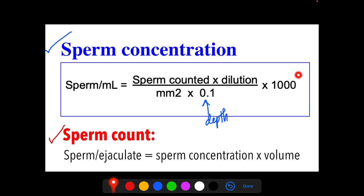For the formula: sperm concentration is reported as sperm per mL — sperm counted (in RBC or WBC squares) multiplied by dilution, divided by the area of the squares used multiplied by 0.1 (the depth of the hemocytometer), multiplied by the constant 1,000. Once you have sperm concentration, sperm count (sperm per ejaculate) is obtained by multiplying sperm concentration by the volume of the semen sample.